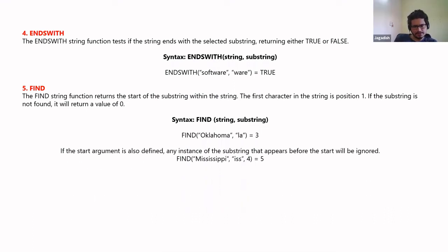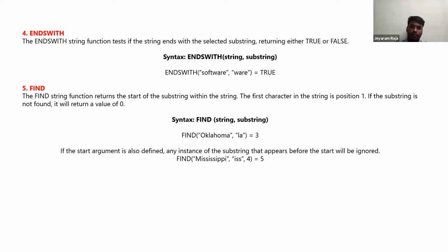FIND also has an optional start parameter that specifies from which position the search should begin. For example, in 'Mississippi', searching for 'iss' starting from position 4 will skip the occurrence at position 2 and return position 5 instead, because the search begins after position 4. This allows more precise control over substring searching.